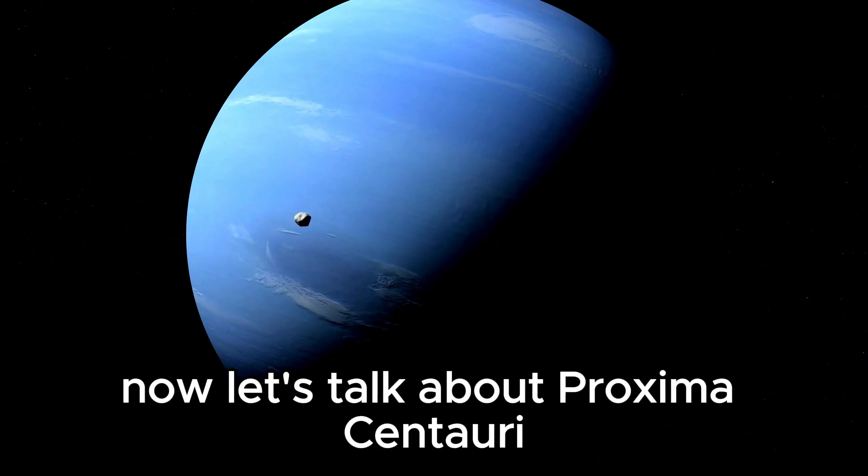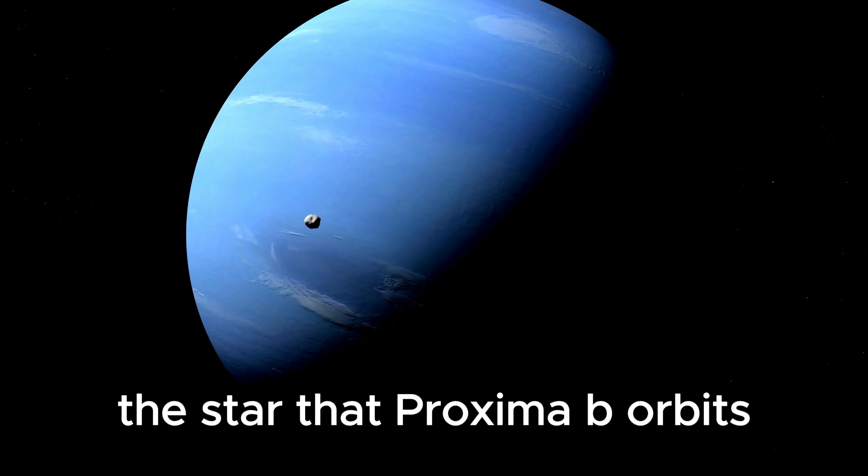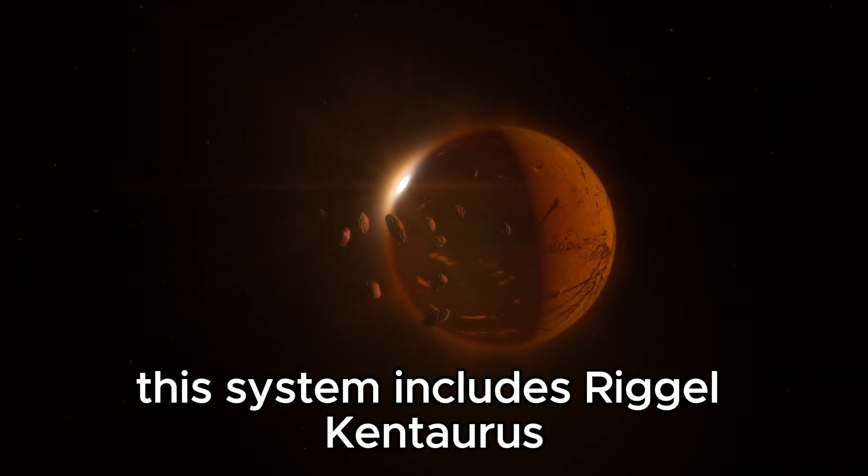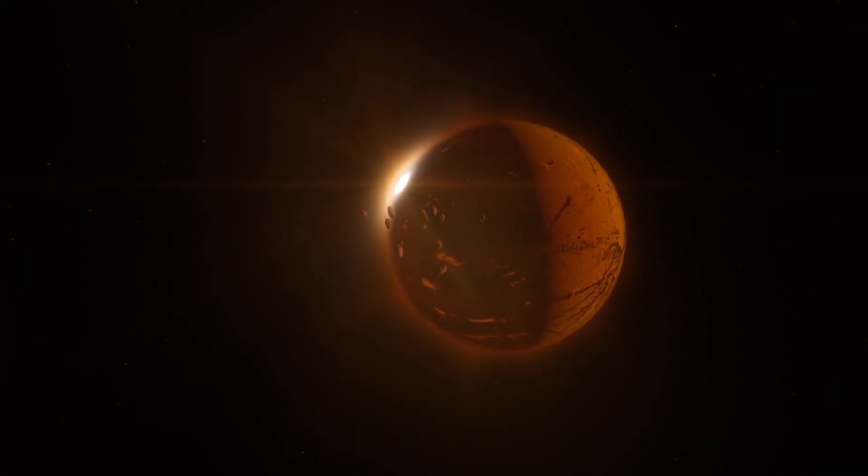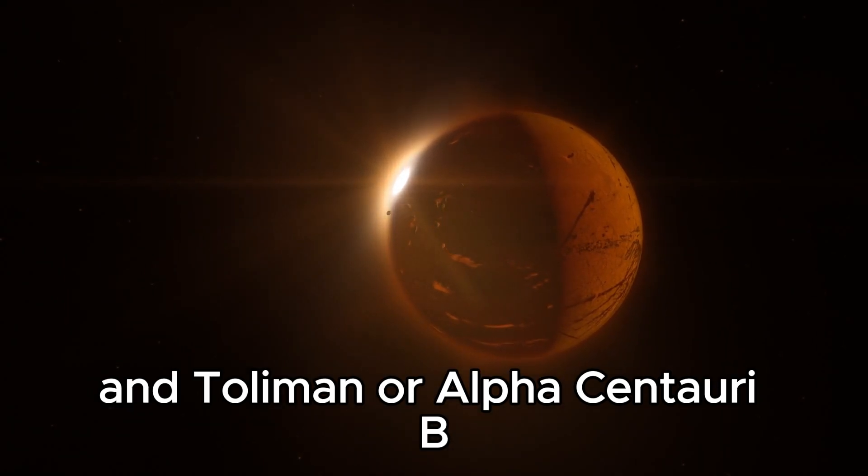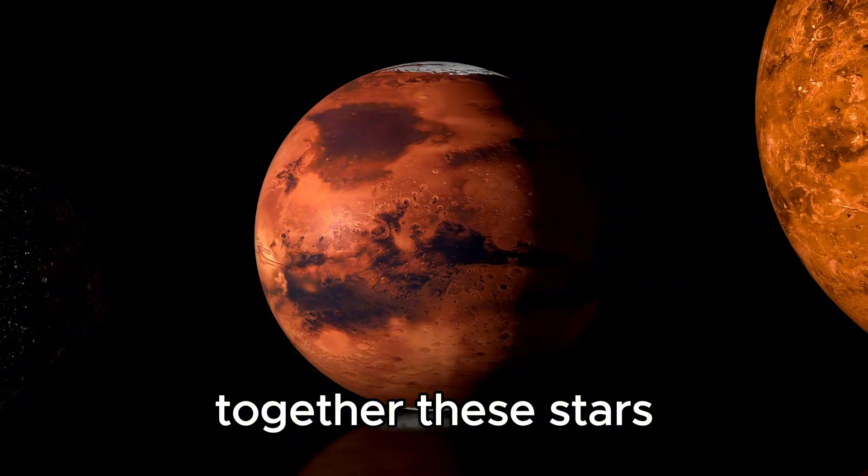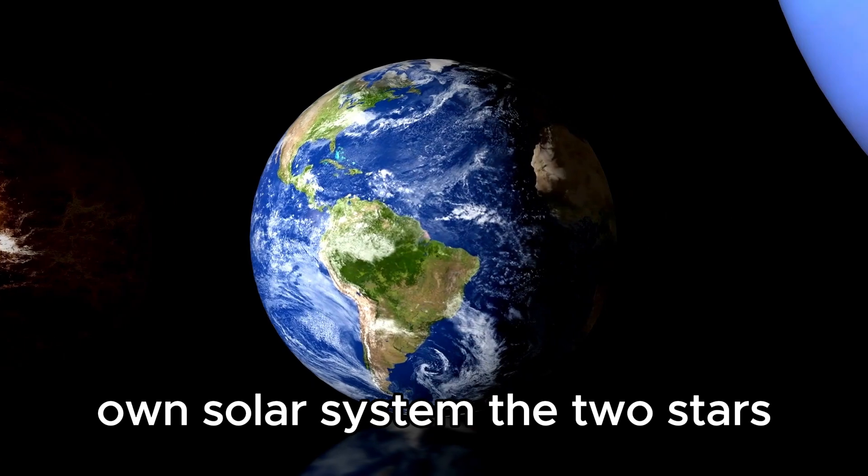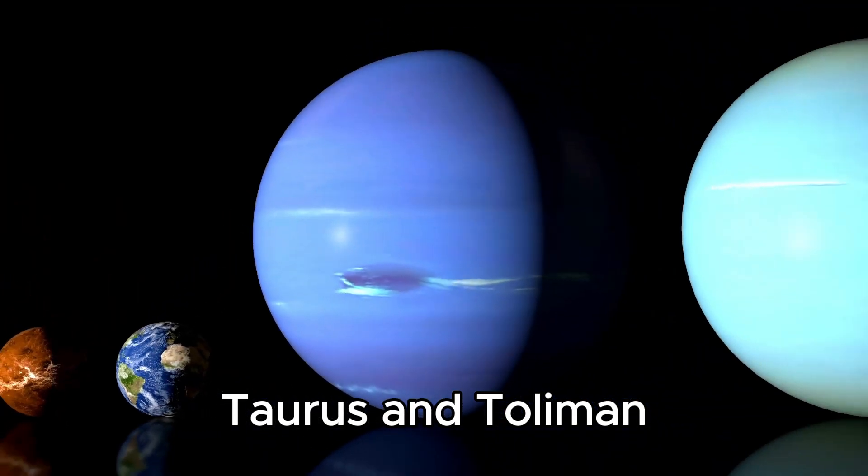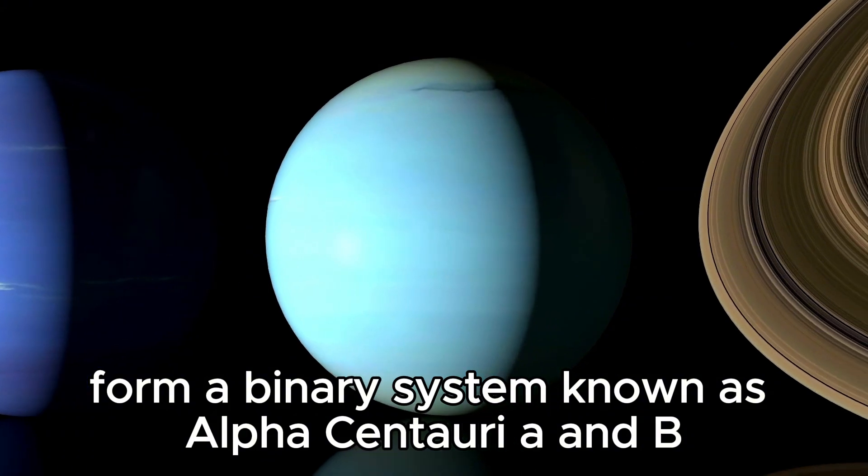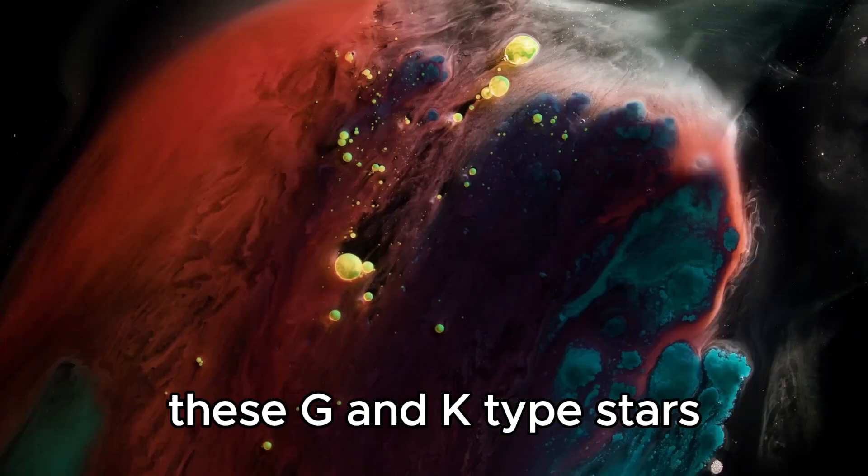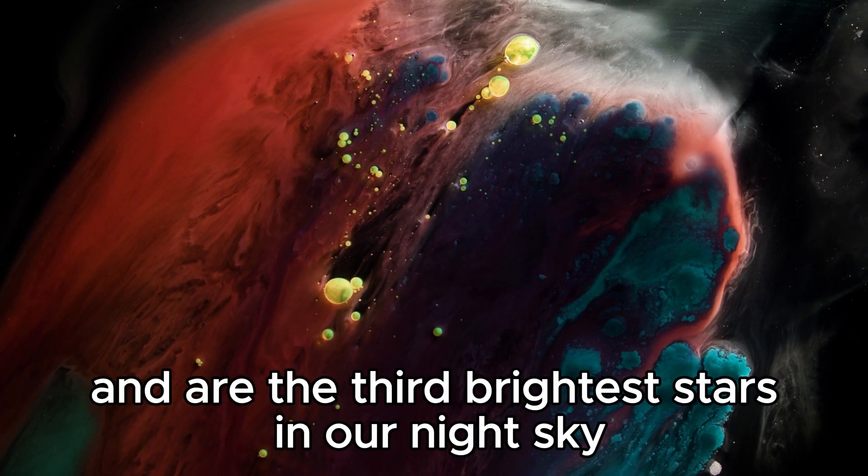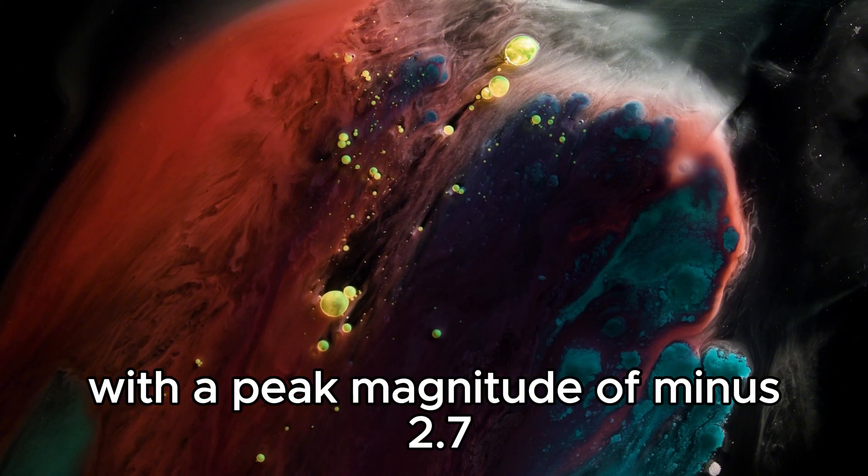Now, let's talk about Proxima Centauri, the star that Proxima b orbits. Proxima Centauri is part of the Alpha Centauri triple star system. This system includes Rigel Centauri, also known as Alpha Centauri a, and Toliman or Alpha Centauri b. Together, these stars create the nearest star system to our very own solar system. The two stars, Rigel Centauri and Toliman, form a binary system known as Alpha Centauri a and b. These G and K type stars appear as one star in the constellation of Centaurus and are the third brightest stars in our night sky, with a peak magnitude of minus 2.7.